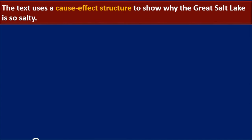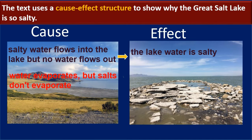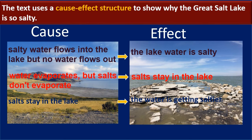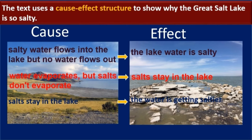The text uses a cause-effect structure to show why the Great Salt Lake is so salty. Cause: Salty water flows into the lake but no water flows out. Effect: The lake water is salty. Water evaporates, but salts don't evaporate. Effect: Salts stay in the lake. Effect: The water is getting saltier.